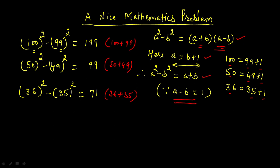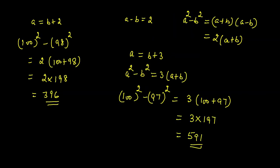Now let's consider when the difference is two — that is, a equals b plus 2. For example, if we have to compute 100 squared minus 98 squared, we apply the same formula: a squared minus b squared equals a plus b times a minus b. Because a minus b is 2, the answer will be 2 times a plus b. So for 100 squared minus 98 squared, the difference is 2, giving us 2 times 198, which equals 396. Without a calculator, you can solve this with this short trick.